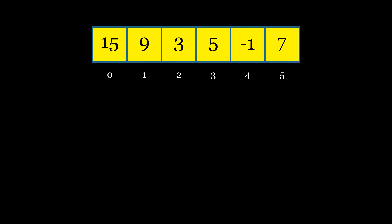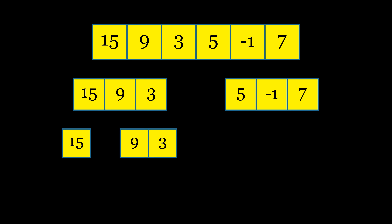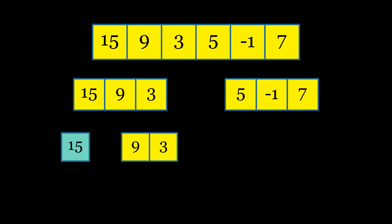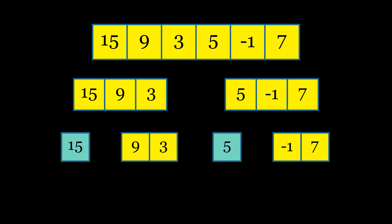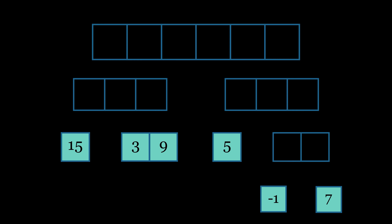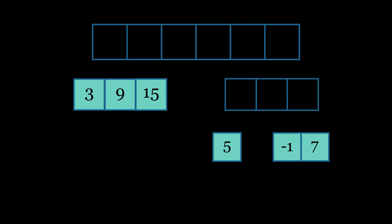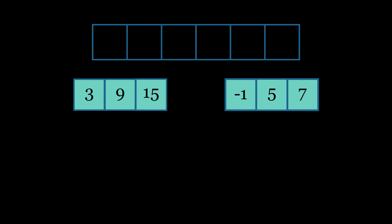Now let's perform merge sort. This algorithm works by recursively dividing the array into two halves until each subarray contains only one element, which represents the base case. In our visual representation, we will use a light bluish color to indicate these base case elements. If the array has an odd length, we split it such that one half has one more element than the other. Once we reach the base case with individual elements, the algorithm starts merging them back together in a bottom-up approach using the merge function defined earlier, combining individual elements into sorted pairs, then sorted quarters, and so on, until we obtain a fully sorted array.